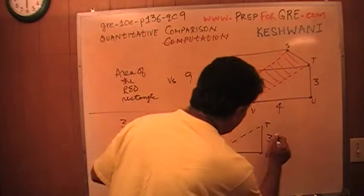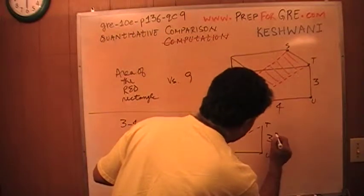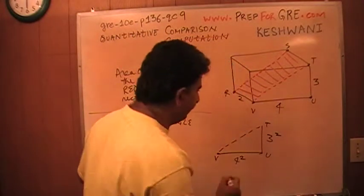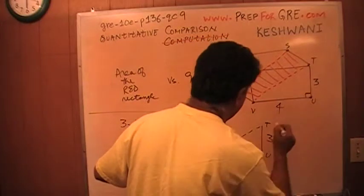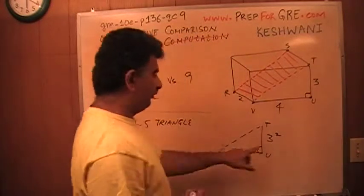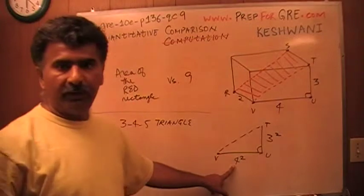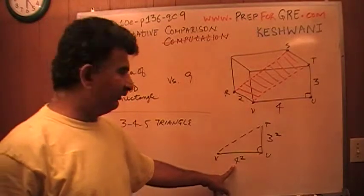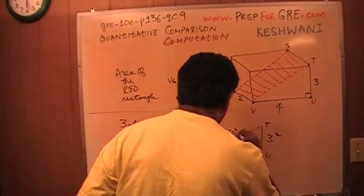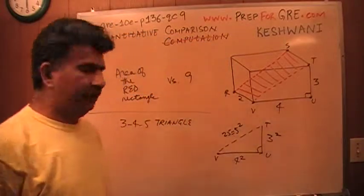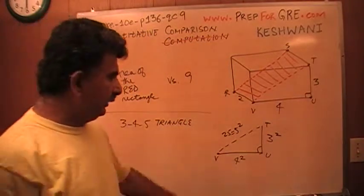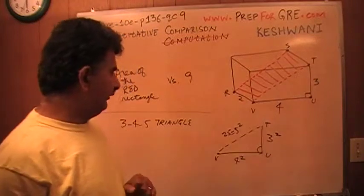As you can see there, 3 squared plus 4 squared. This is a right angle. It's a right angle triangle. 3 squared, which is 9, plus 4 squared, which is 16. 9 plus 16 is 25, which is 5 squared. It obeys the Pythagorean theorem: A squared plus B squared equals C squared.